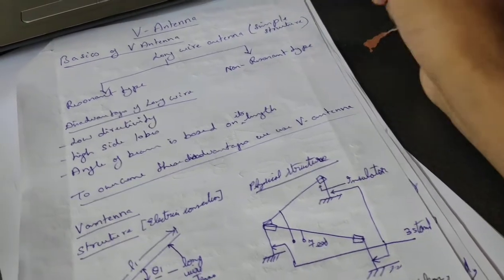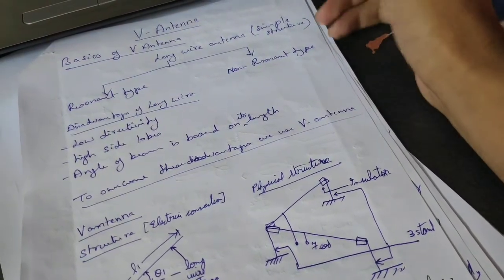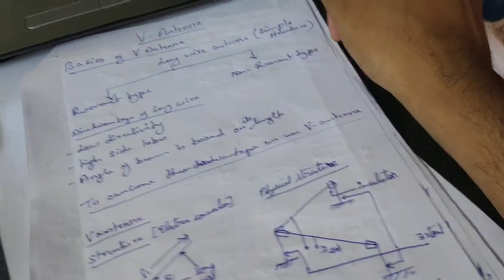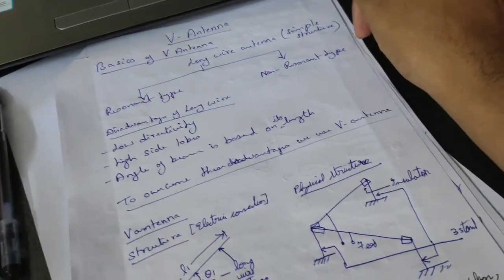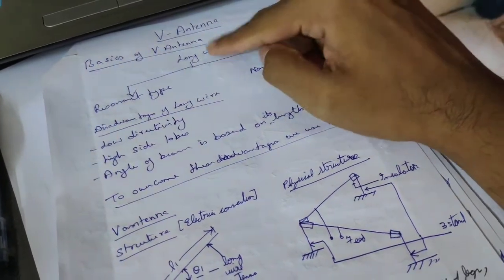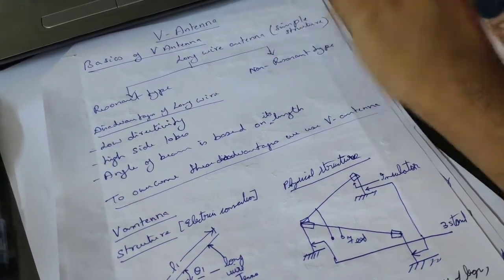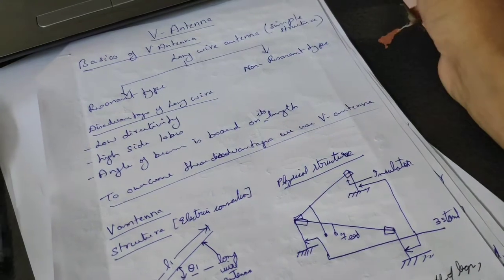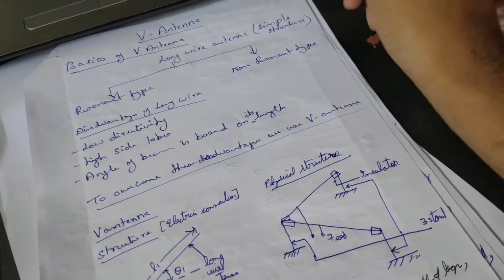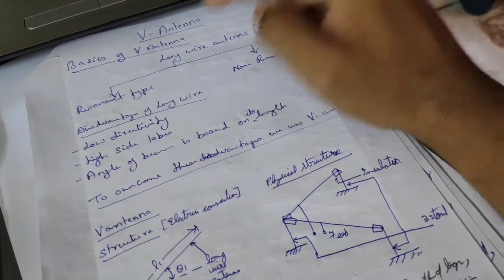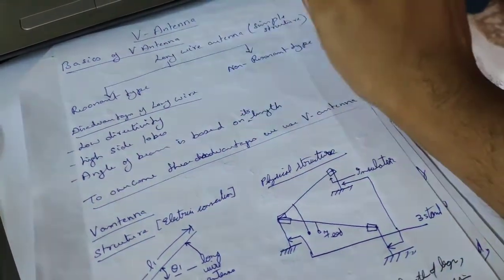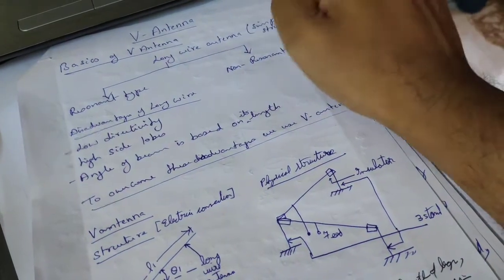Before going to V antenna, we should know why we need it. Before V antenna, there was an antenna called the long wire antenna, which is the simplest structure of a wire antenna. It is classified into two types: resonant type and non-resonant type.